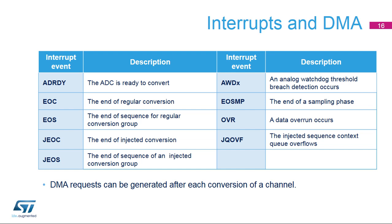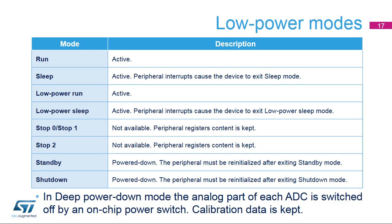DMA requests can be generated at each end of conversion when the ADC output data is ready. The ADCs are active in run, sleep, low-power run, and low-power sleep modes.